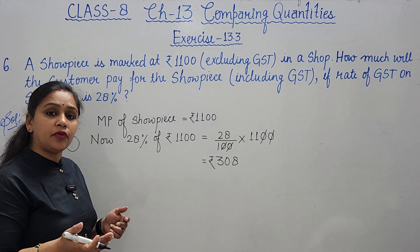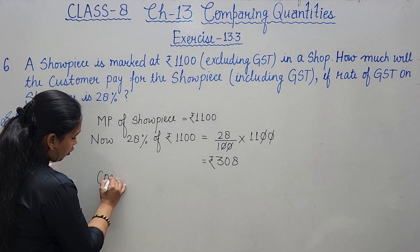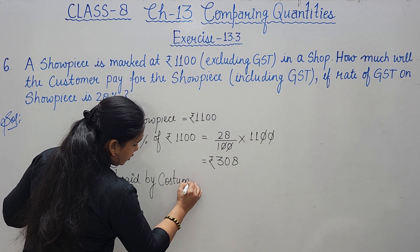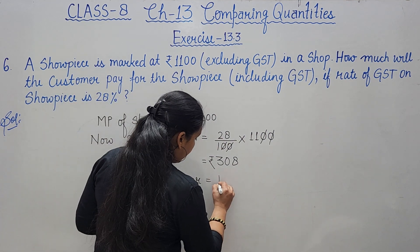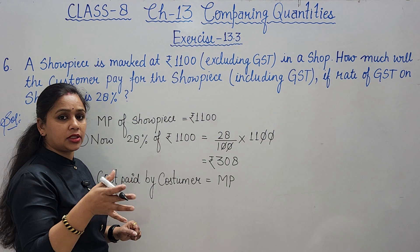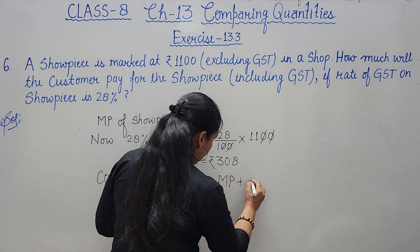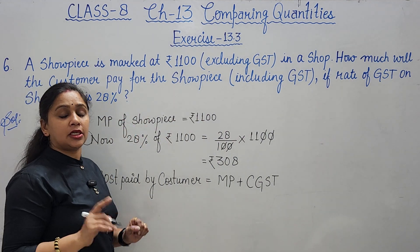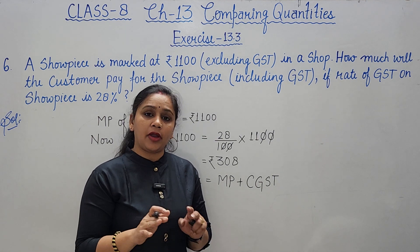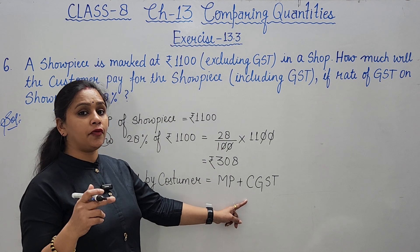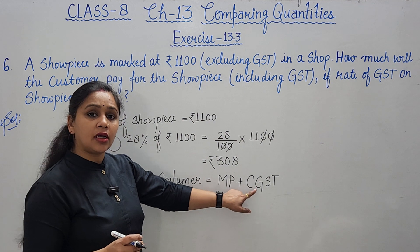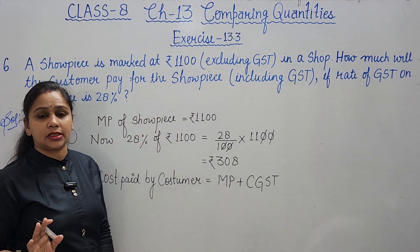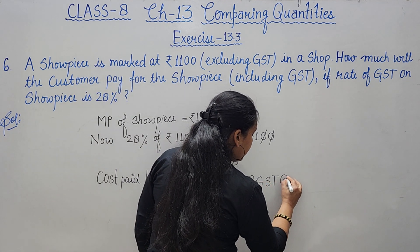Now how do we note this? The cost paid by the customer is: marked price (original shop price) plus CGST plus SGST. Since 28% GST is split 50-50%, CGST is 14% and SGST is 14%. Half of 308 is 154, so CGST = rupees 154 and SGST = rupees 154.